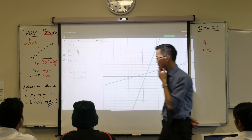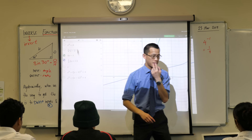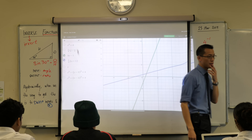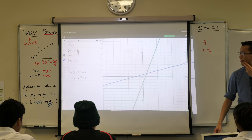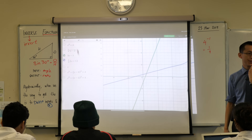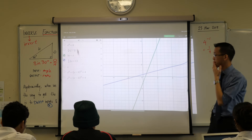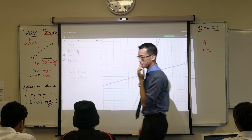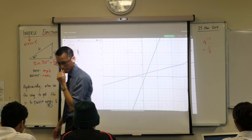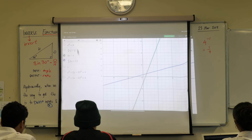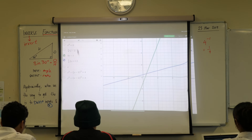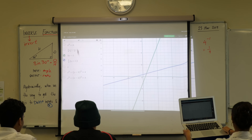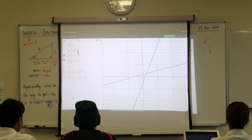If you need the equations, it's 3x minus 1 for the first one — the original — and then a third of x plus 1 for the inverse. Got it? I'm waiting for you now.